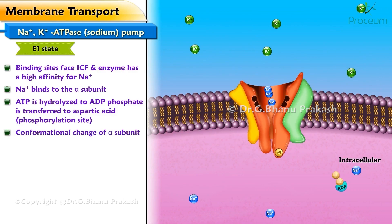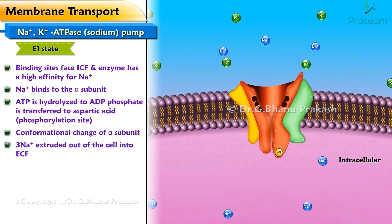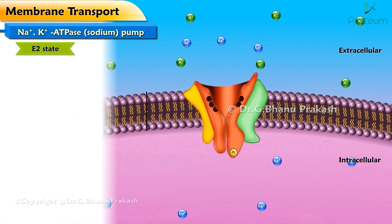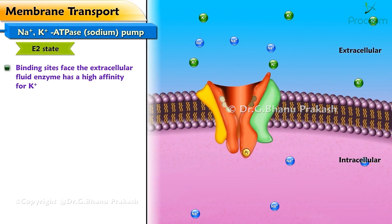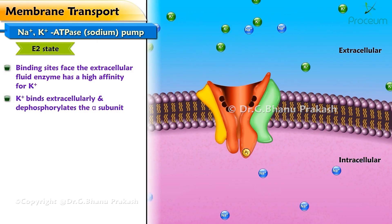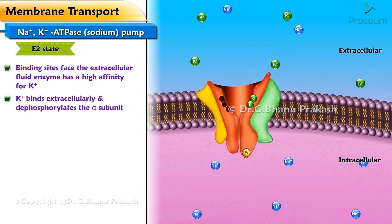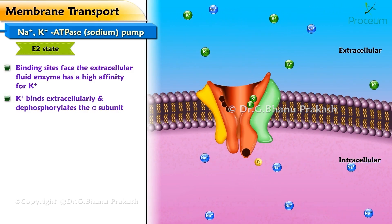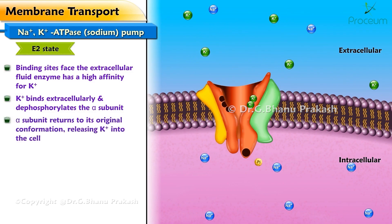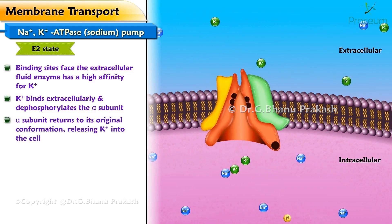A phosphate is transferred to aspartic acid, the phosphorylation site. This causes a conformational change in the protein, extruding three Na+ ions out of the cell and into the ECF. In the E2 state, the binding sites for Na+ and K+ ions face the extracellular fluid, and the enzyme has a high affinity for K+. K+ binds extracellularly, dephosphorylating the alpha subunit, which returns to its original conformation.